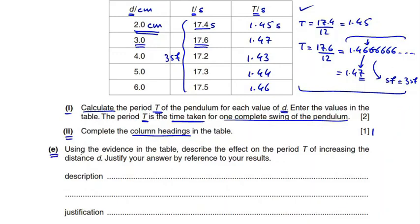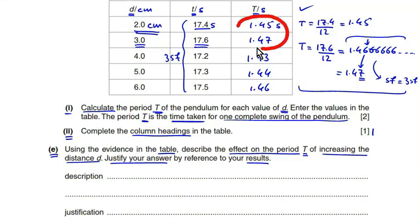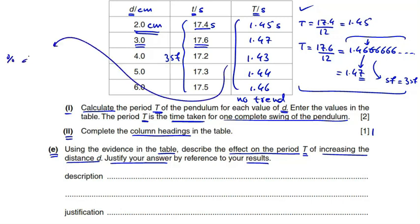Part e says: using the evidence in the table, describe the effect on the period capital T of increasing the distance d. Justify your answer by reference to your results. Note that the value of d continuously increases from the first row to the last row, but the value of period T increases a little from row one to row two, then decreases a little, then increases again — there is no clear trend, neither increasing nor decreasing. The values of T are very close to each other, and the percentage difference between any two values is less than 10 percent. So we can say that period T remains constant — increasing d has no effect on period.